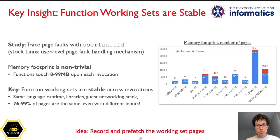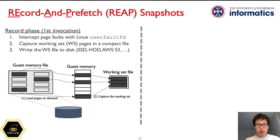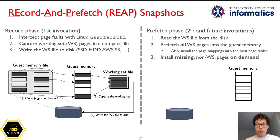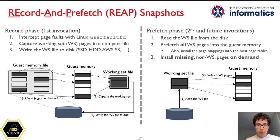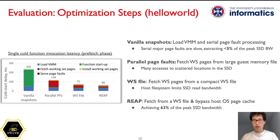This leads us to a simple yet powerful idea of recording and prefetching the working set of functions upon a cold start. Our record-and-prefetch solution, called REAP Snapshots, consists of two phases. First is the record phase, where upon the very first invocation, the system intercepts page faults and loads pages into guest memory on demand, while simultaneously capturing these pages as the function working set. After invocation processing is finished, the captured working set is written back to storage. All invocations after the first enjoy the expedited prefetch phase: the entire working set file is read from storage, and all these pages are installed eagerly into guest memory. This avoids the bulk of the page faults, except for rare accesses to pages outside the working set that are still retrieved on demand. REAP Snapshots accelerate all cold starts after the first invocation at the cost of a little extra storage.